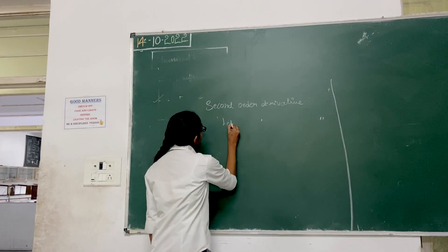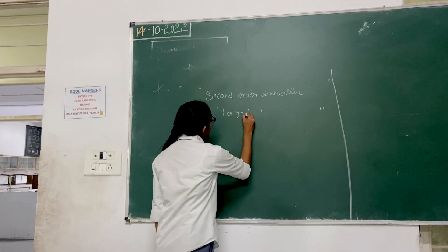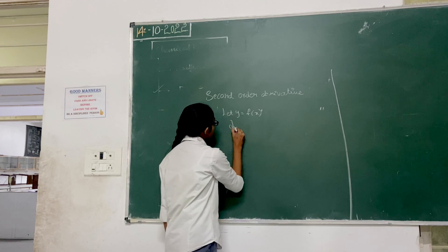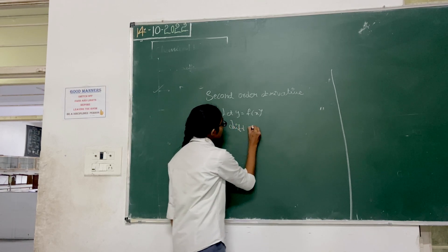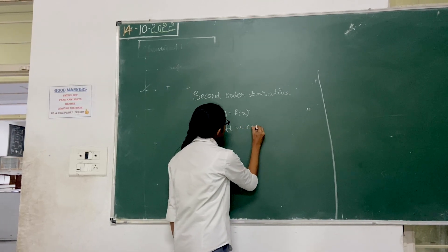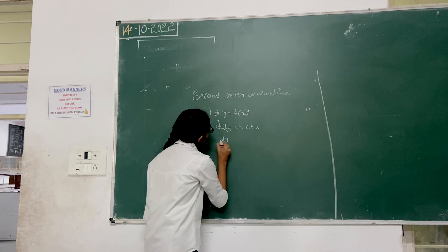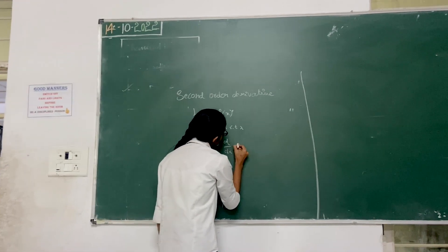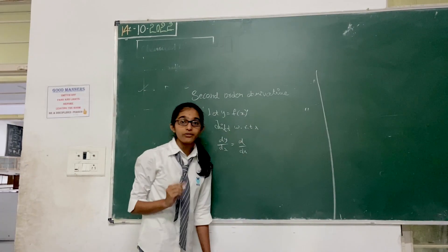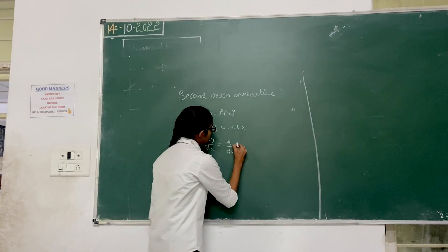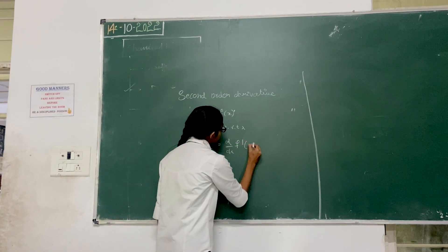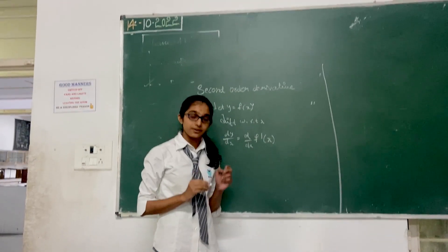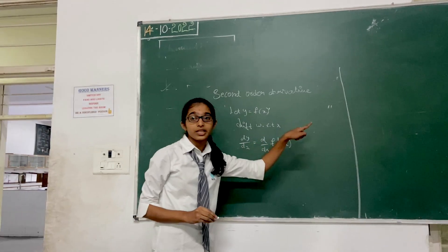First, let y be equal to f of x. Differentiate with respect to x: dy by dx is equal to d by dx of f of x, which is f dash x.